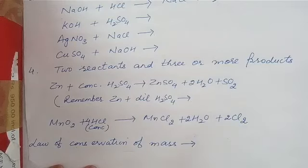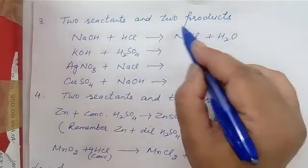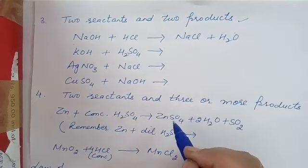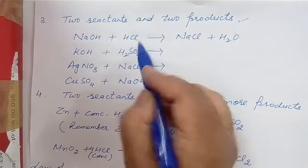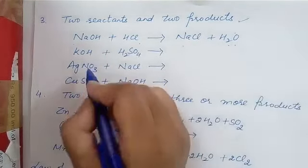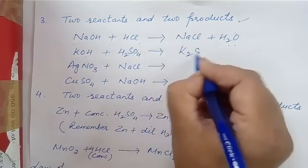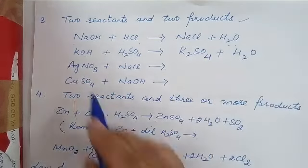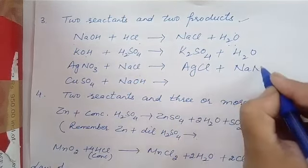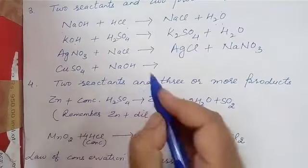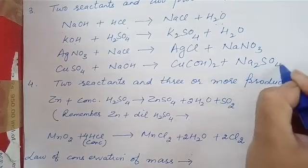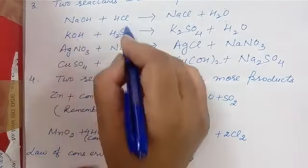The third type is when the reactants are two and the products are also two — these are called double decomposition reactions or precipitation reactions. For example, sodium hydroxide reacts with hydrochloric acid to give sodium chloride and water. Potassium hydroxide reacts with sulfuric acid to give potassium sulfate and water. Silver nitrate reacts with sodium chloride to give silver chloride and sodium nitrate. When copper sulfate reacts with sodium hydroxide, we get copper hydroxide and sodium sulfate. This reaction takes place by exchanging the radicals of both reactants.